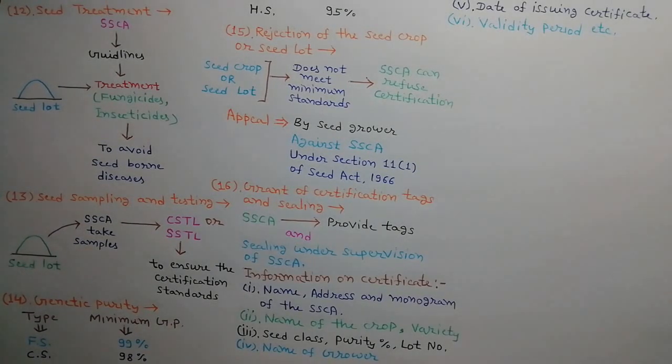The seed certification agency will provide certification tags and sealing of the lot will be done under its supervision. The certificate will carry information like name, address, and monogram of the certification agency, name of the crop, variety and class of the seed, purity percentage, lot number, name of the seed grower, date of issuing certificate, and validity period.